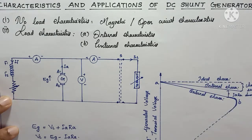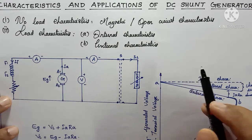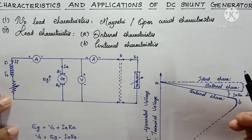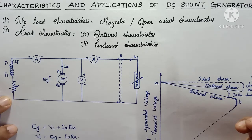In the OCC we will discuss the important conditions for voltage build-up in a DC shunt generator, including critical field resistance and critical speed. We can discuss those in the next video.